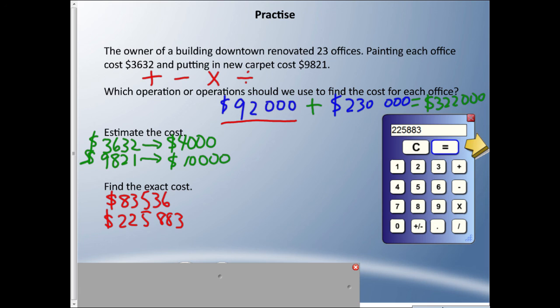Are we done? No, we need to find the exact cost. Just like we did with the estimate, we need to add these two together. $83,536 for the paint, I'm going to add $225,383, and we get a grand total of $309,419. That's pretty good because we have six digits in the 300 thousands for our estimate. I bet you all want to run out and get a downtown building and start renovating—I hope you have that much pocket change kicking around.